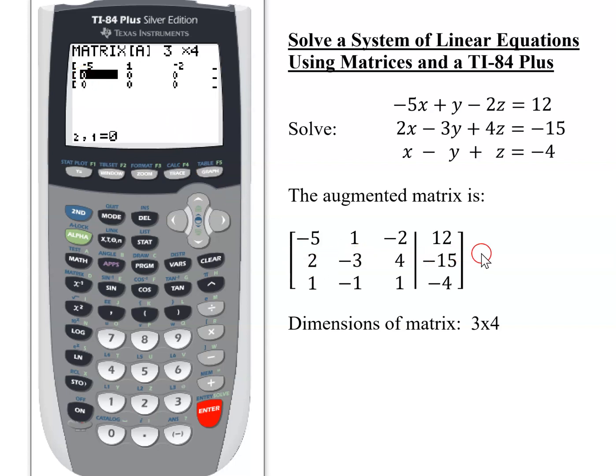So now all I have to do is put in row two. 2, enter, negative 3, enter, 4, enter, negative 15, enter. Finish row two.